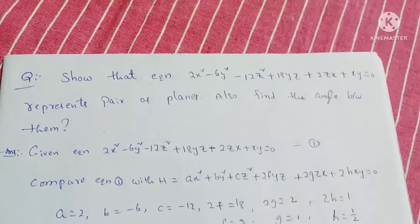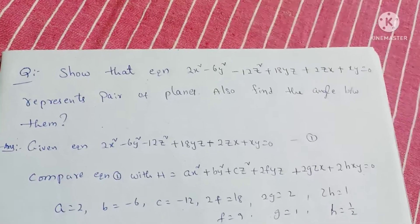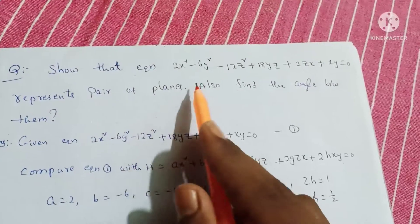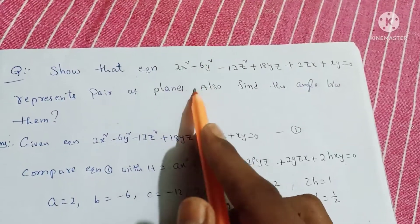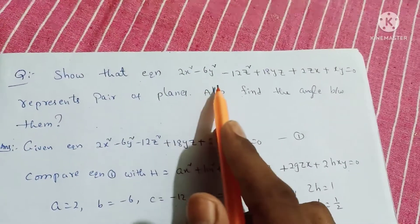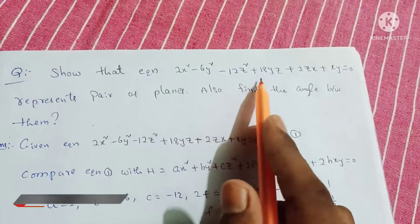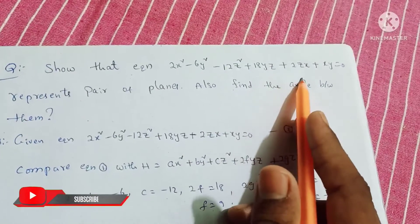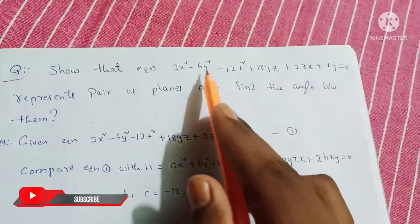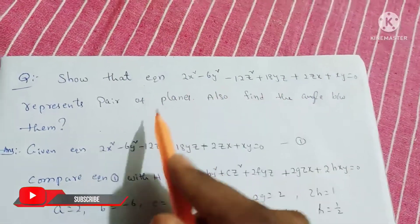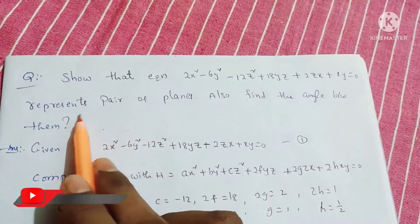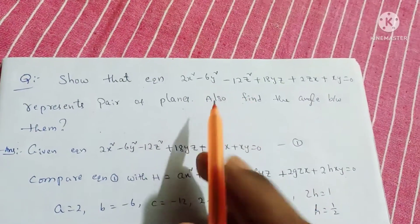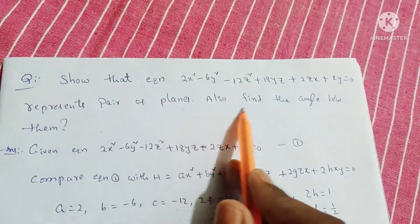In this chapter, this is a very important question. Show that the equation 2x squared minus 6y squared minus 12z squared plus 18yz plus 2zx plus xy is equal to 0 represents a pair of planes. Also, find the angle between them.